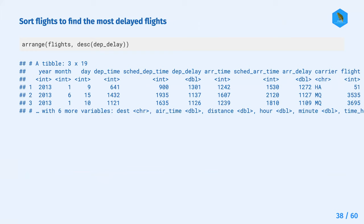For the first part of the prompt - sorting flights to find the most delayed - we might use arrange, indicate the flights data frame, and then specify the dep_delay column. Because we want to see which flights are most delayed, we'd want to sort from most delayed to least delayed.